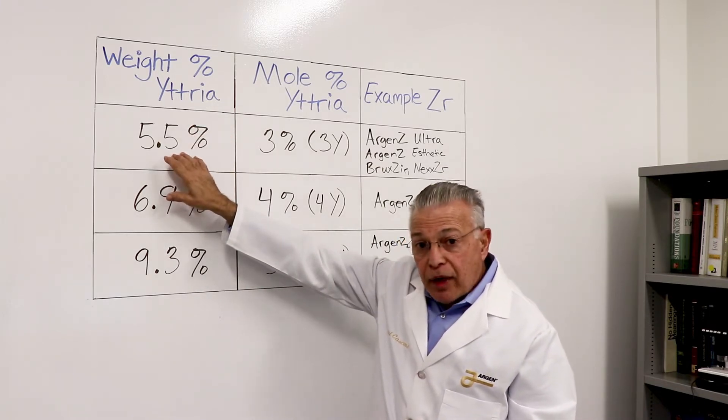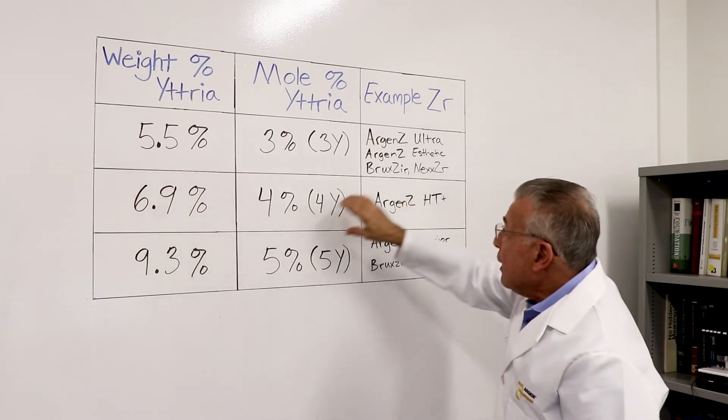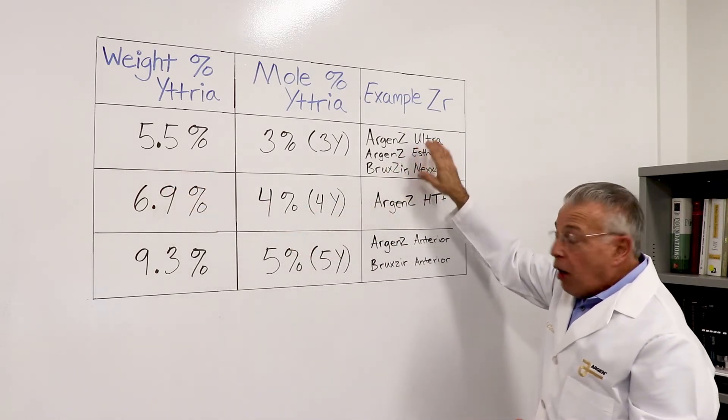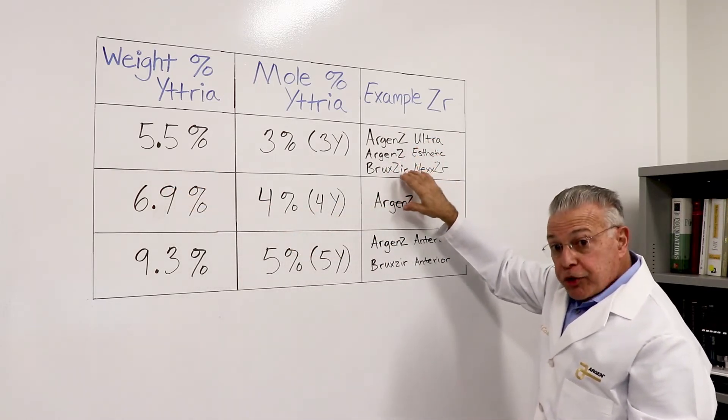For example, about 5.5 percent is present in Arganzy Ultra, Arganzy Aesthetic, Bruxer, or Nexer.